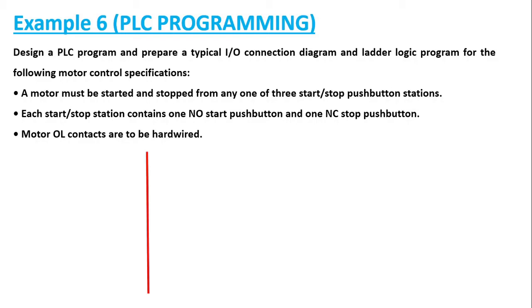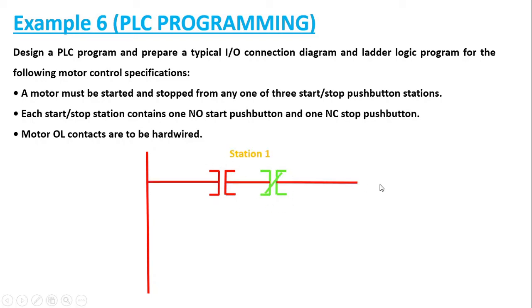We will be requiring one normally open start push button and one normally closed stop push button per station. Each station contains one normally open start push button and one normally closed stop push button. Let us consider station one: it has one normally open start push button and one normally closed stop push button, connected to the motor in this particular fashion.